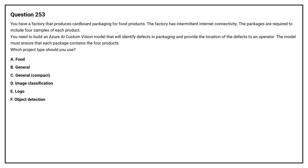Question number 253. You have a factory that produces cardboard packaging for food products. The factory has intermittent internet connectivity. The packages are required to include four samples of each product. You need to build an Azure AI custom vision model that will identify defects in packaging and provide the location of the defects to an operator. Which product type should you use?